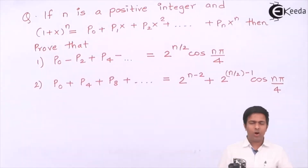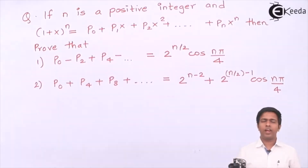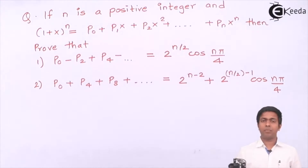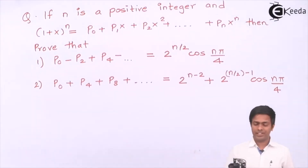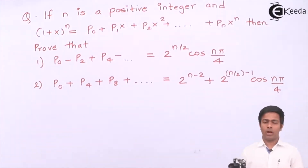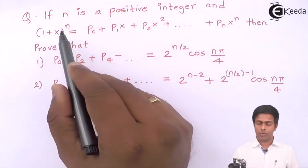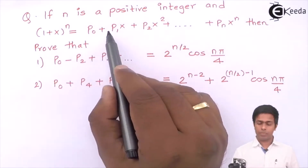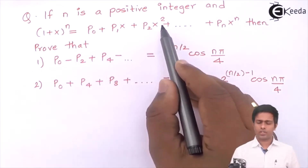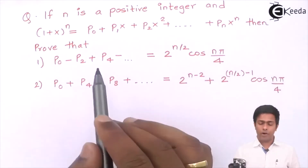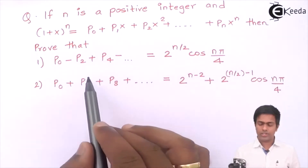Hi friends, now we are going to do one more numerical on De Moivre's theorem where n is given as a positive integer. We have been given the relation: (1 + x)^n = p0 + p1·x + p2·x² + ... + pn·x^n, and we have to prove two results.